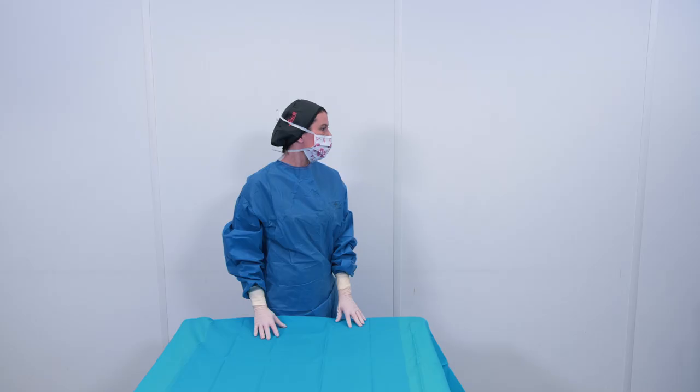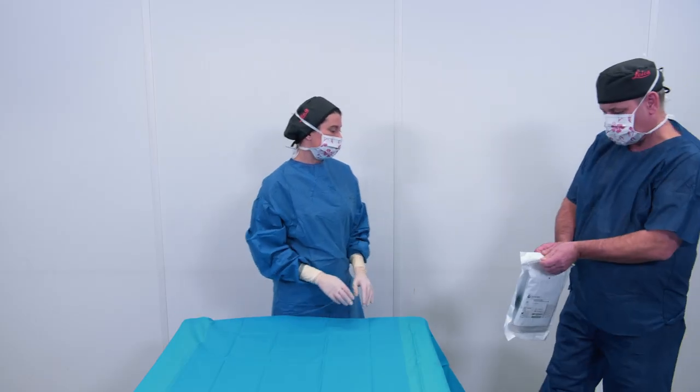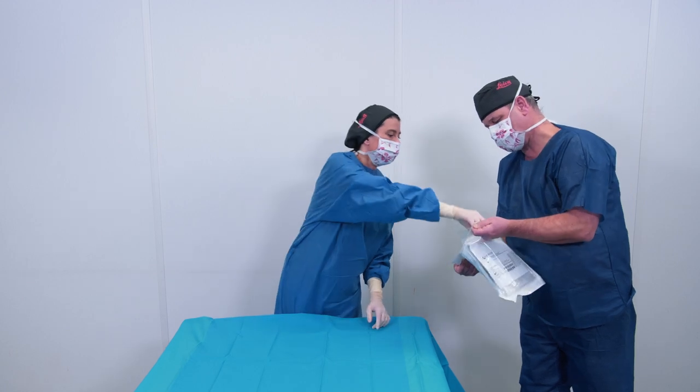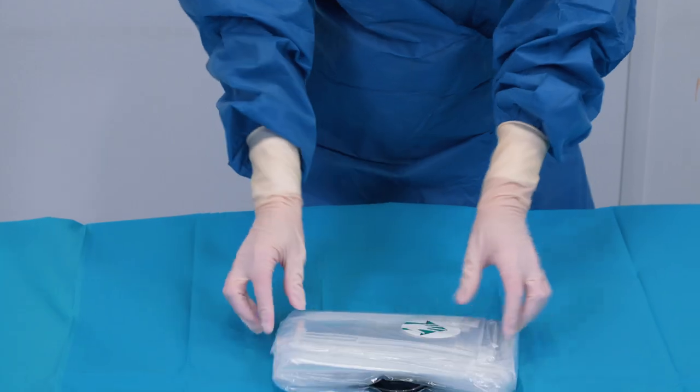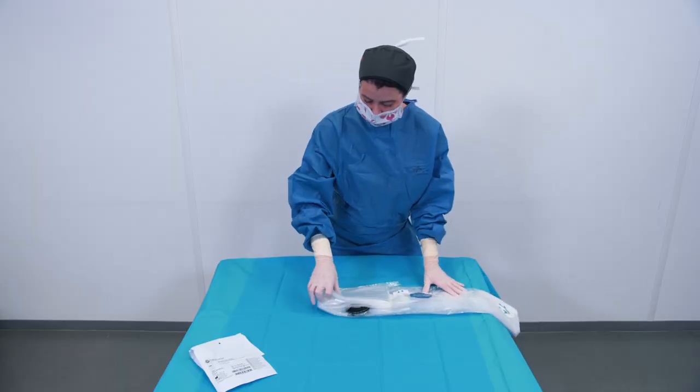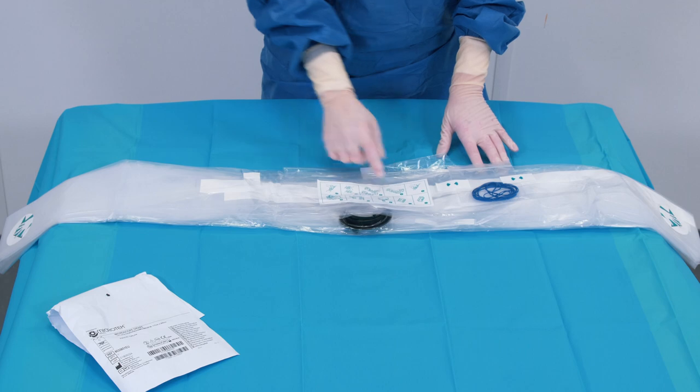The non-sterile nurse should open the drape for the scrub nurse. Grab the drape with the hand picture facing you. Unfold the drape, first to the left and then to the right. The instructions must be upright and facing you.